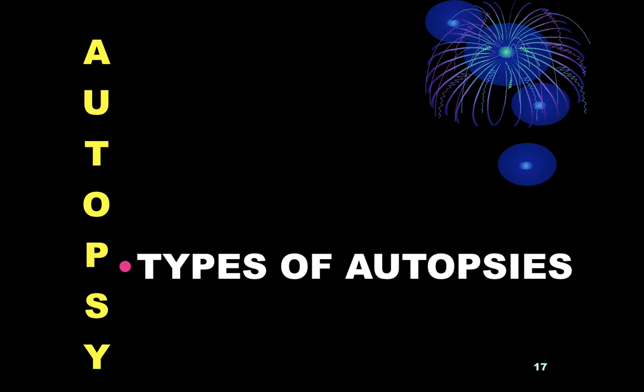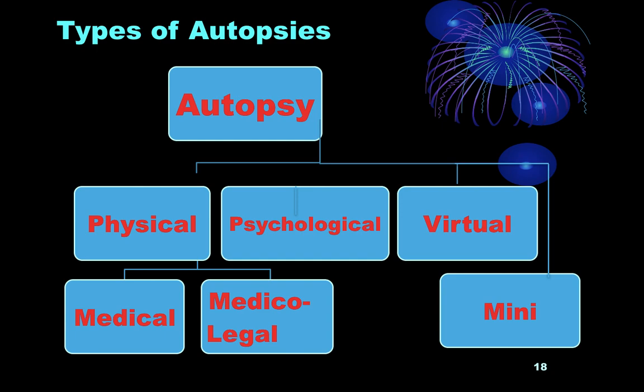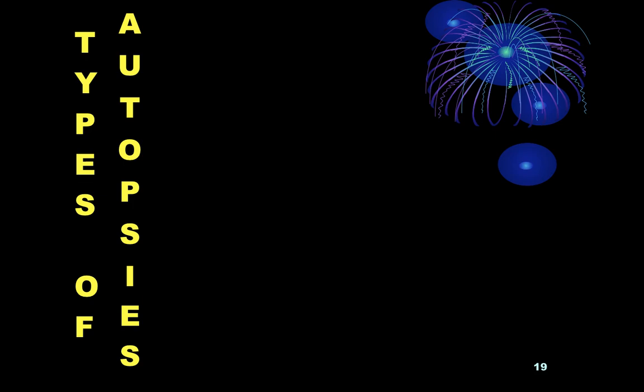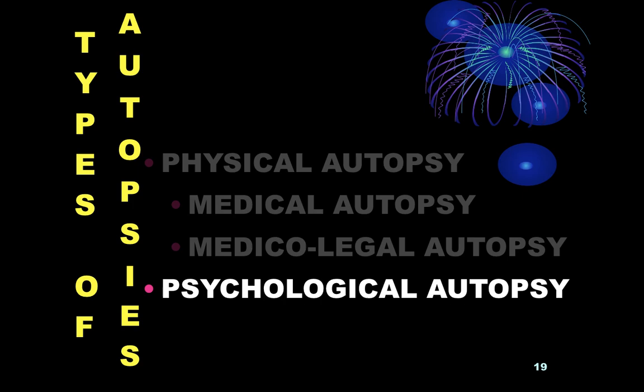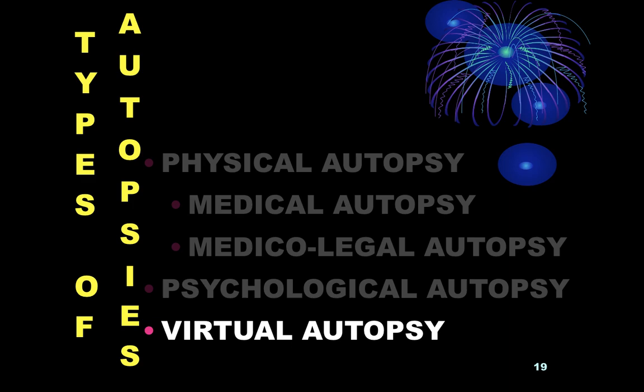There are various types of autopsy: physical autopsy, which may be either medical or medical-legal; then psychological autopsy; virtual autopsy; and mini autopsy. Physical autopsy is divided into medical and medical-legal autopsy, whereas psychological autopsy is basically a sort of investigation.